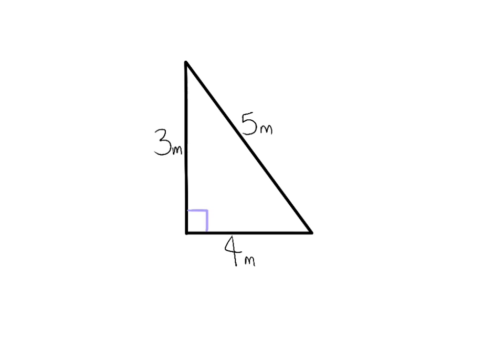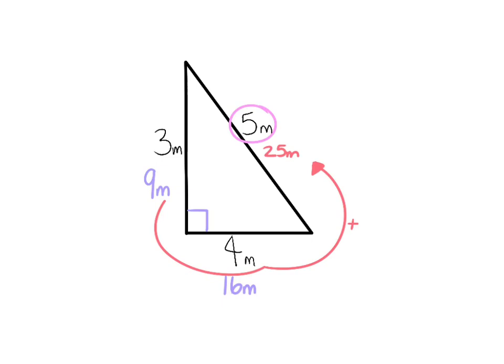that means it is a right-angled triangle, because 3 squared equals 9, 4 squared equals 16, and 5 squared equals 25. So when you add 9 to 16, it equals 25. Therefore, 5 is the hypotenuse.